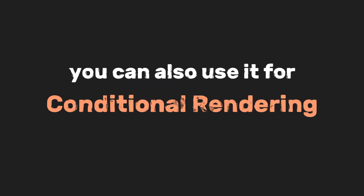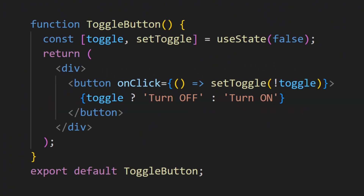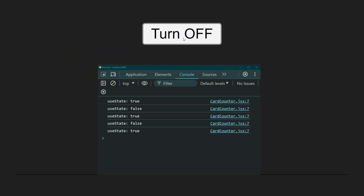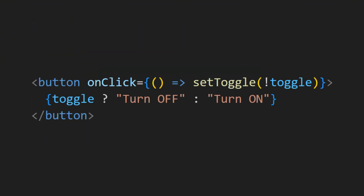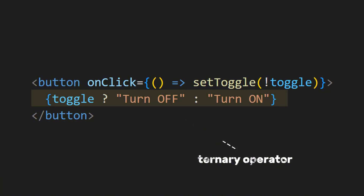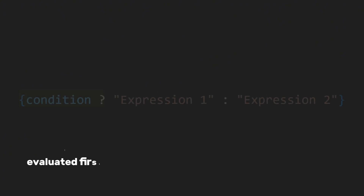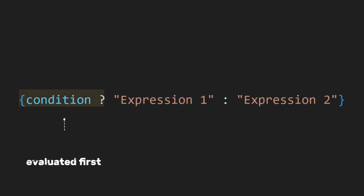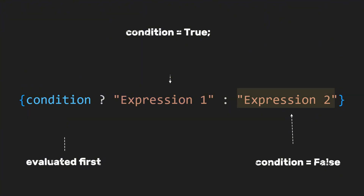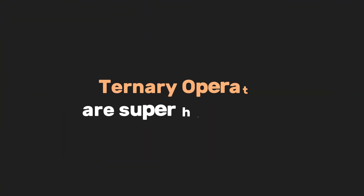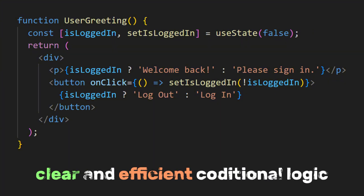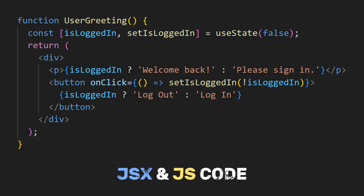You can also use useState for conditional rendering. For example, imagine you start useState with a value of false — when you click a button, it toggles the state, acting like an on and off switch. Inside the button, you can use a ternary operator to decide what gets shown. A ternary operator is a neat way to write conditional statements with three parts: a condition to be validated, expression 1 if true, and expression 2 if false. Ternary operators are super handy in React because they let you write clear and efficient conditional logic right inside your JSX.